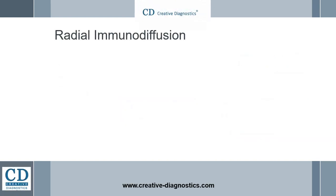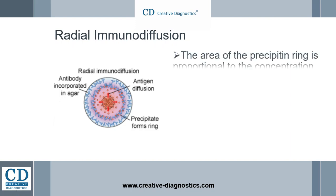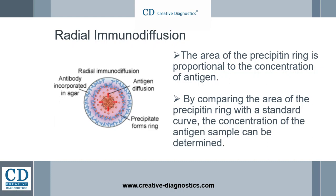In radial immunodiffusion, an antigen sample is placed in a well and allowed to diffuse into agar containing a suitable dilution of an antiserum. As the antigen diffuses into the agar, the region of equivalence is established, and a ring of precipitation, as well as a precipitin ring, form around the well. The area of the precipitin ring is proportional to the concentration of antigen. By comparing the area of the precipitin ring with a standard curve obtained by measuring the precipitin areas of known concentrations of the antigen, the concentration of the antigen sample can be determined.